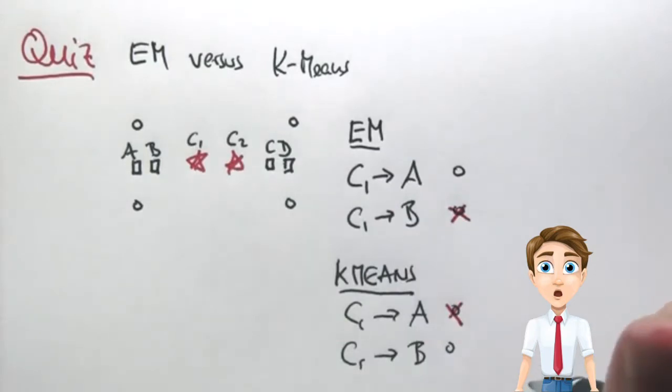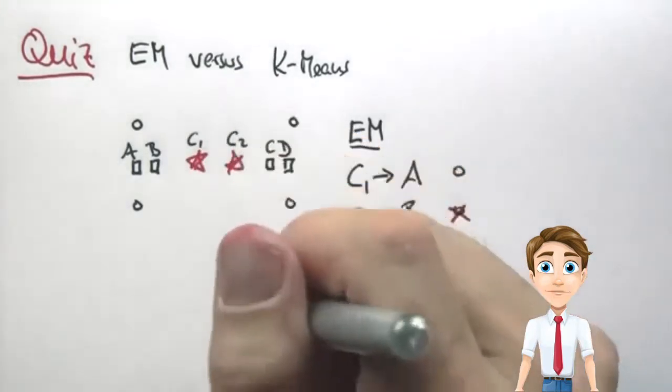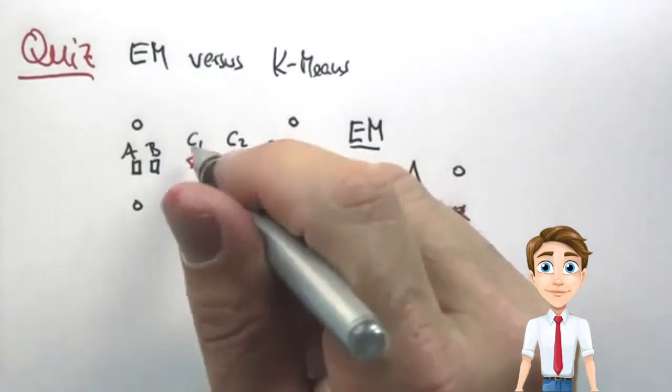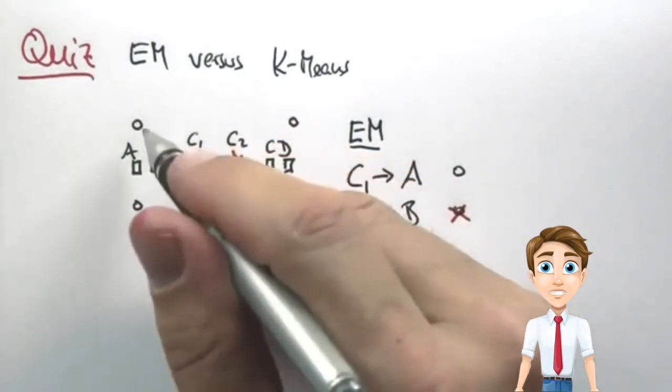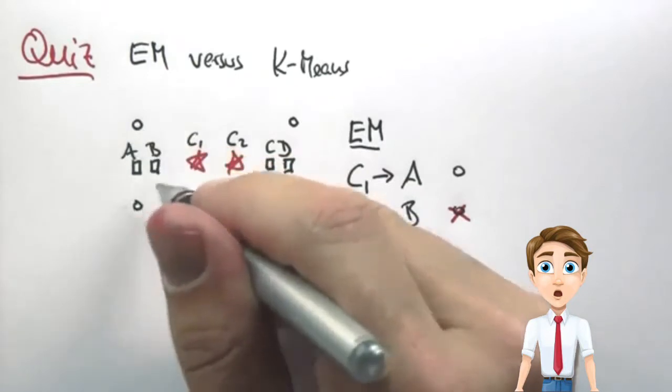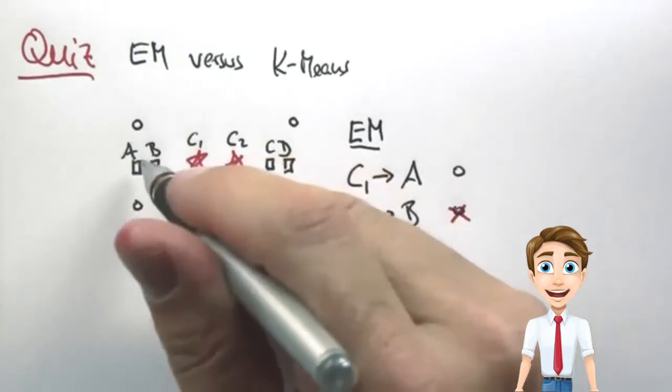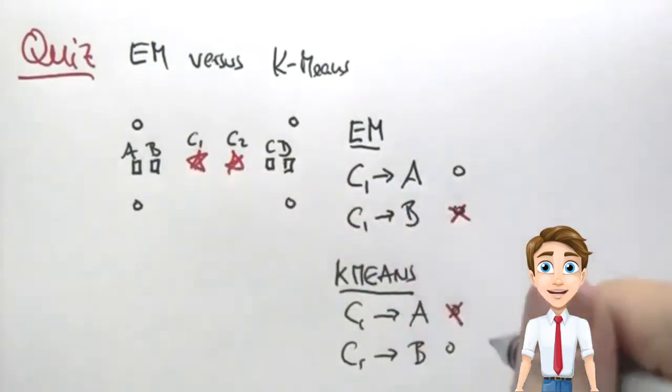And this has to do with the soft versus hard nature of the correspondence. In K-means, the correspondence is hard. So after the first iteration, only these two data points over here correspond to cluster center 1, and it will find itself straight in the middle, where A is located.